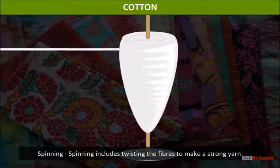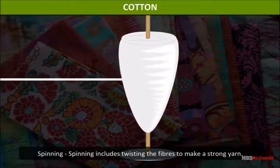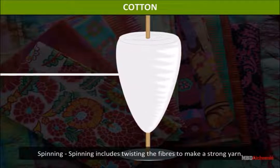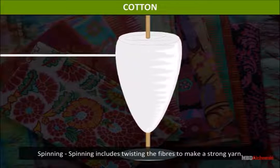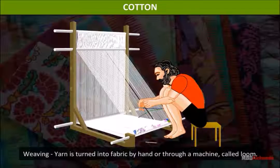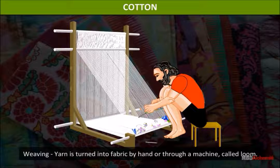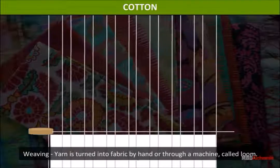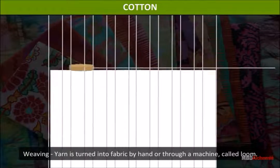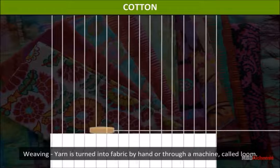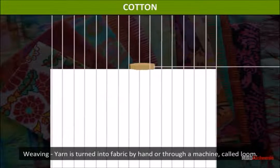Spinning involves twisting the fibers to make a strong yarn. In weaving, yarn is turned into fabric by hand or through a machine called a loom.